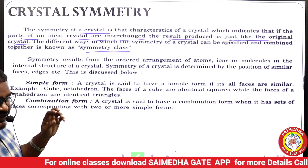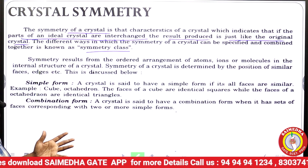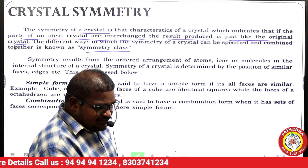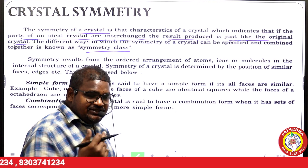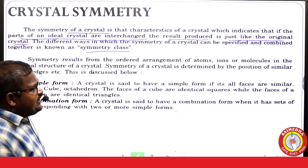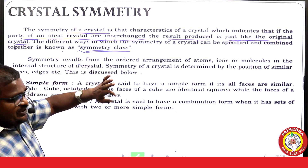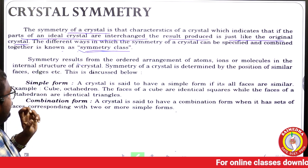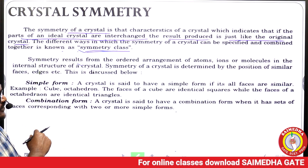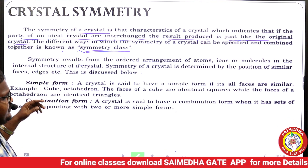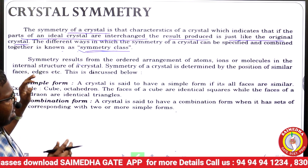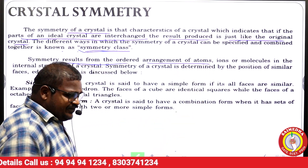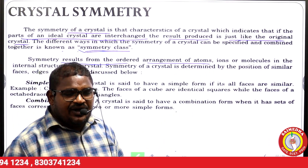The different ways in which the symmetry of a crystal can be specified and combined together are known as the symmetry class. Symmetry results from the ordered arrangements of atoms, ions, or molecules in the internal structure of the crystal. The symmetry of a crystal is determined by the positions of similar faces, edges, etc.